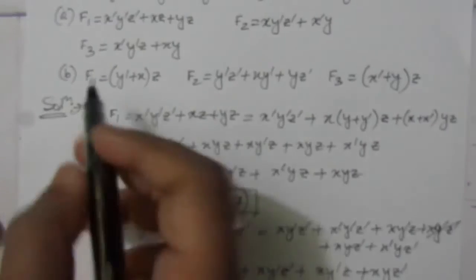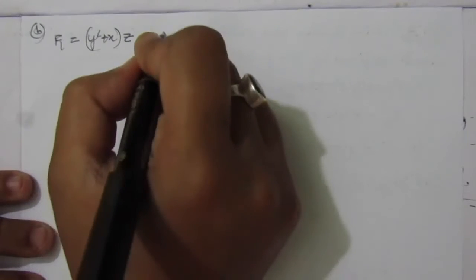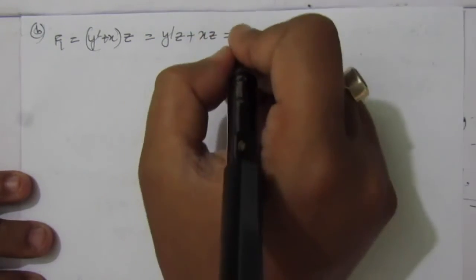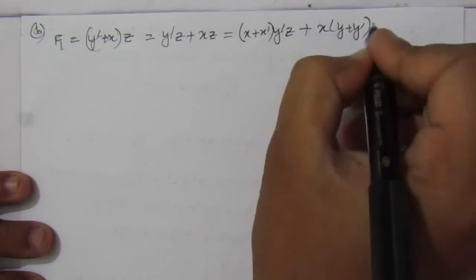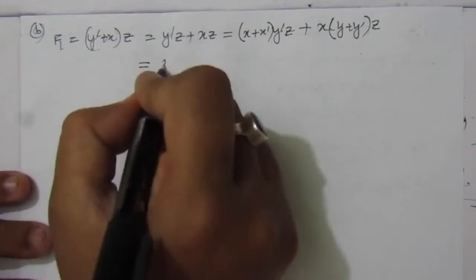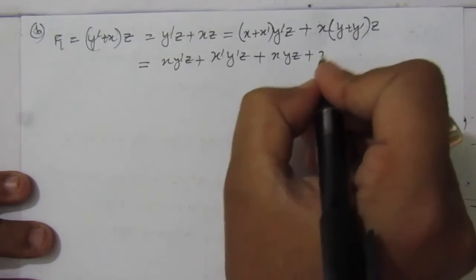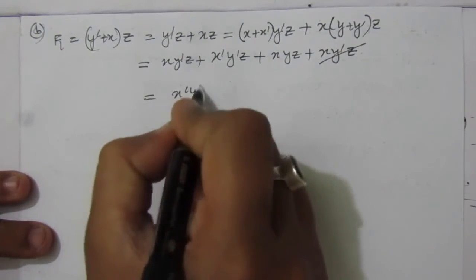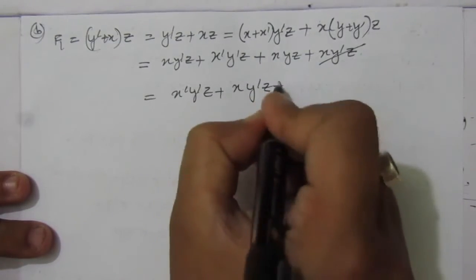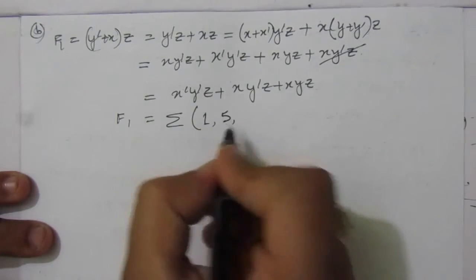Now let us go to the second part of the problem. In part B, F1 = y-bar + x·z. Expanding: y-bar z + x z, multiplied by the missing variables. We get x-bar y-bar z + x y-bar z + x y z, with the duplicate x y-bar z omitted. So F1 = Σm(1, 5, 7).